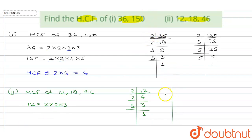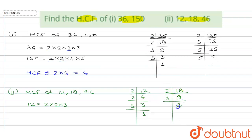Now the factorization of 18. Since 18 is an even number, it is divisible by 2, giving 9. Then 9 is divisible by 3, giving 3; and 3 is divisible by 3. So the factorization of 18 is 2 × 3 × 3.